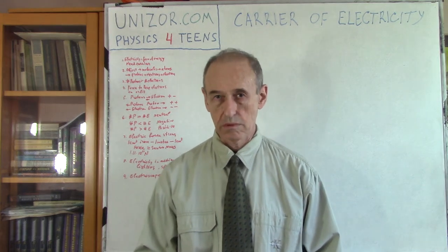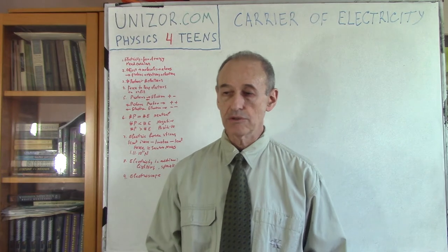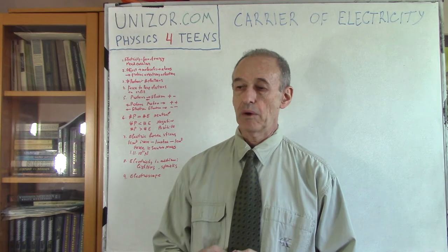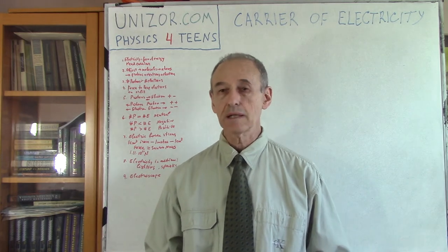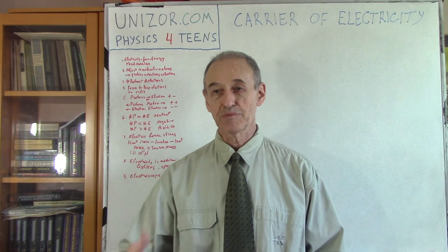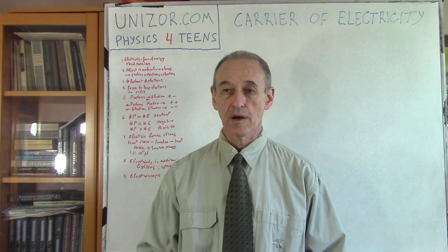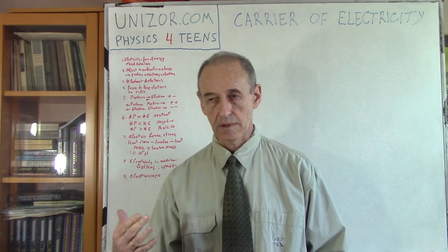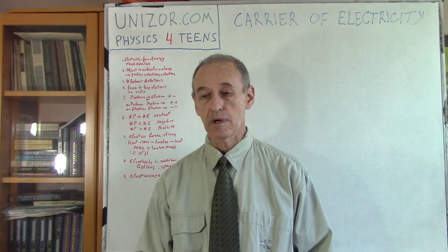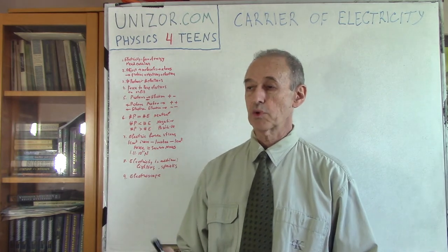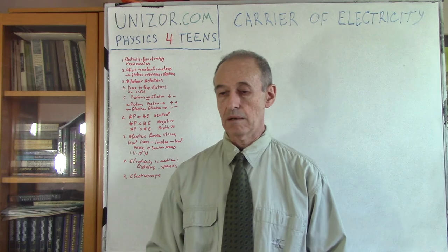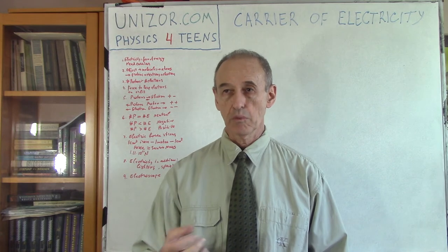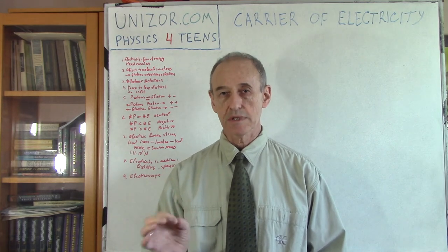Electricity is a form of energy. As a form of energy, it should have certain substance behind it. If it's mechanical energy, the substance behind it — the objects behind it — are moving objects; the motion of the objects is the carrier of mechanical energy. If we are talking about thermal energy, the source of thermal energy is oscillating molecules inside the object.